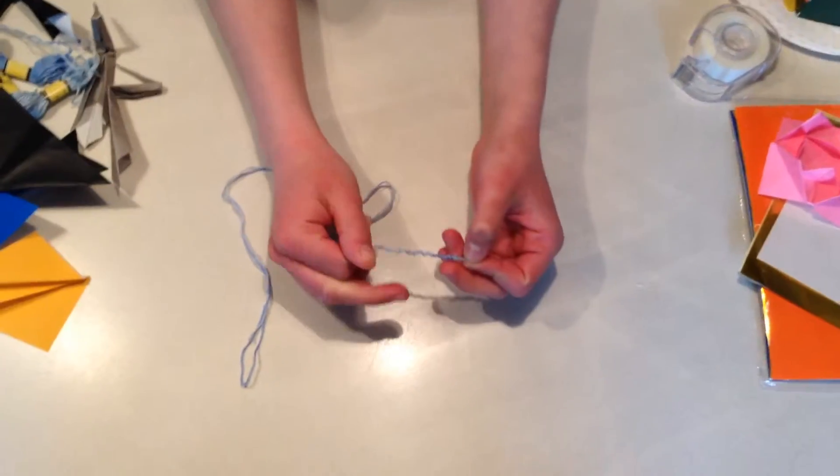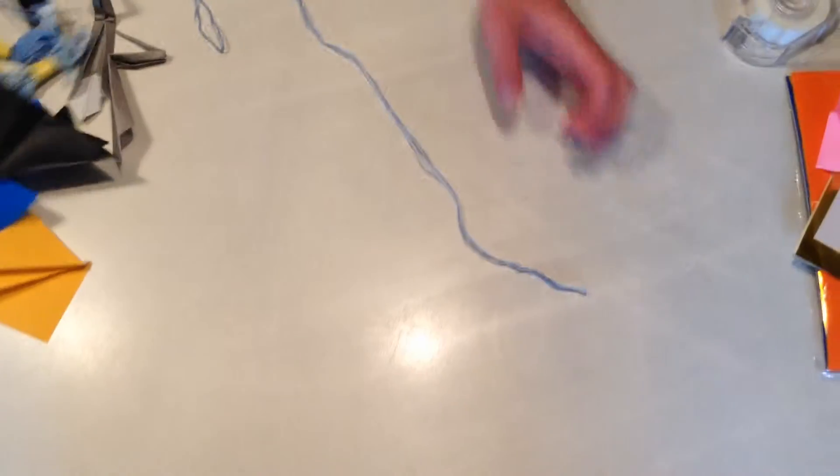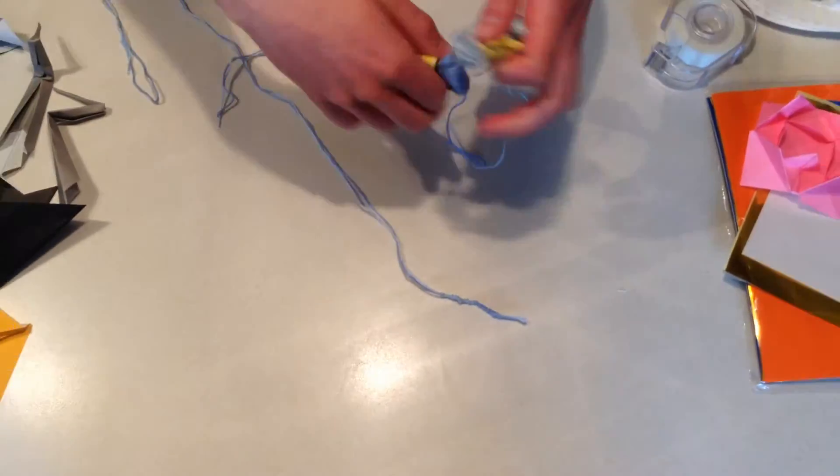Today we're going to be making a friendship bracelet. You're going to take two different types of embroidery thread. You can choose whatever colors you want.